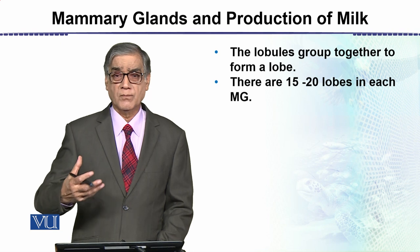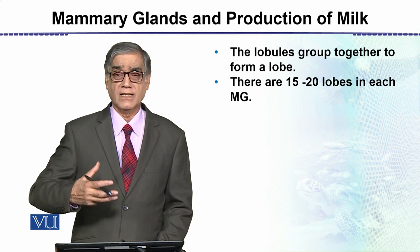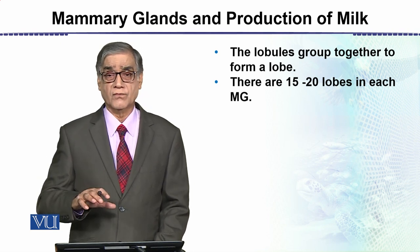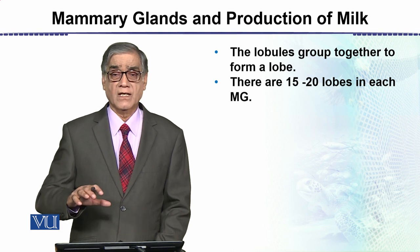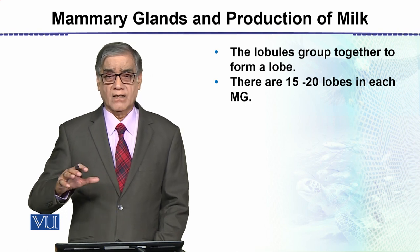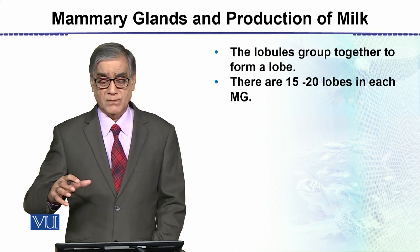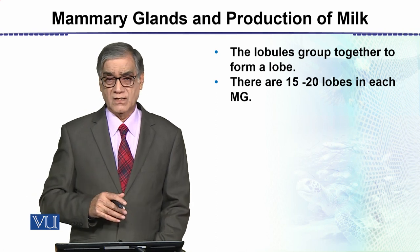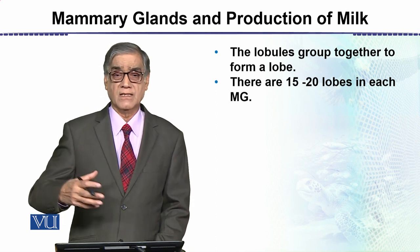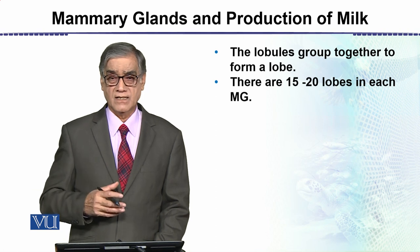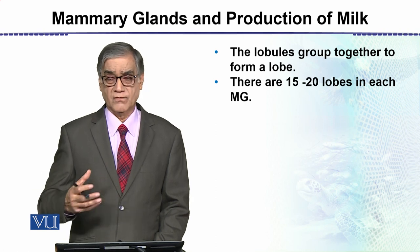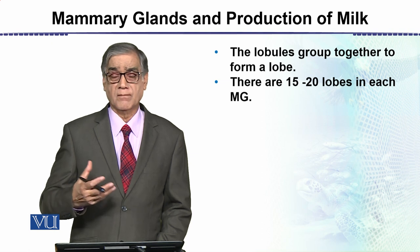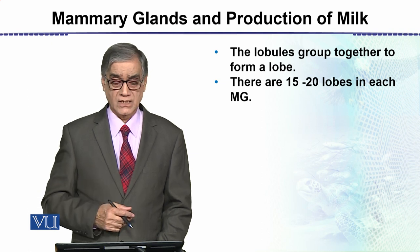The production of milk is under hormonal control. Milk production generally takes place after the birth of the child. Hormonally, there is the process of milk production and then milk ejection.